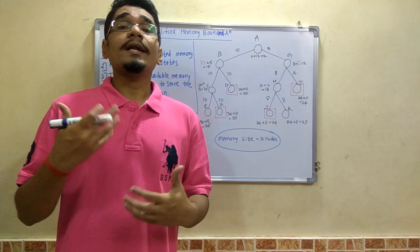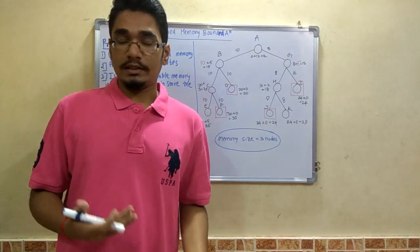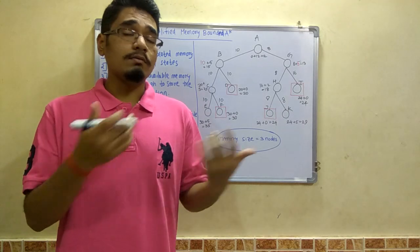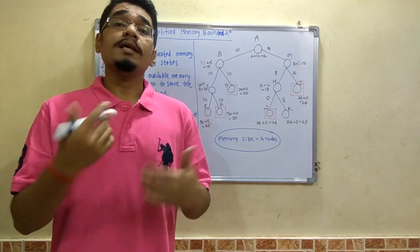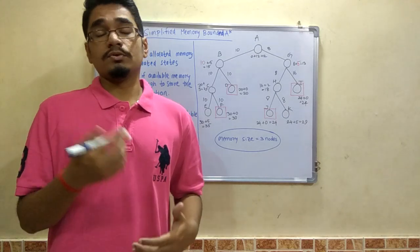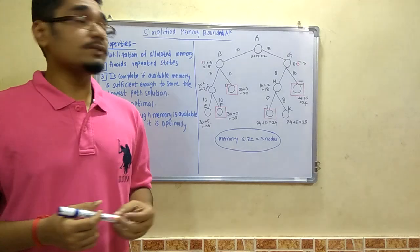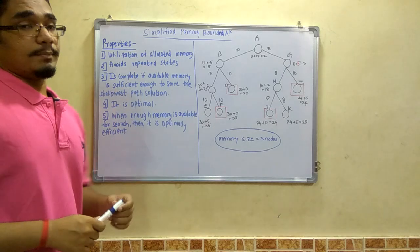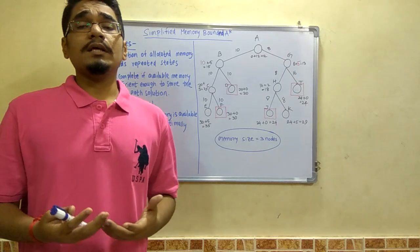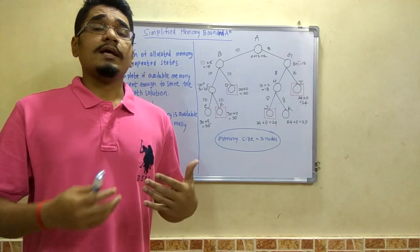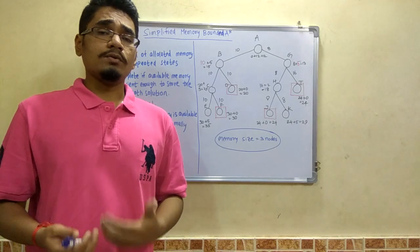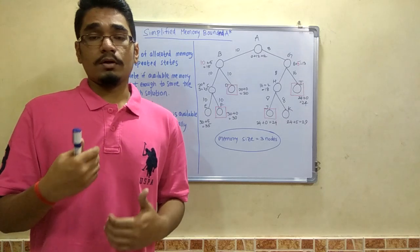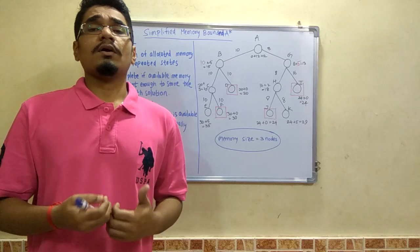It will provide an optimal solution for all nodes in the tree. Here are some of the properties of the SMA* algorithm. The algorithm itself remains similar to A* and IDA*, so let's look at its properties. First, it utilizes all the allocated memory — whatever memory is allocated to solve SMA* will be utilized very efficiently, with no memory leakage or risk of running out of memory.